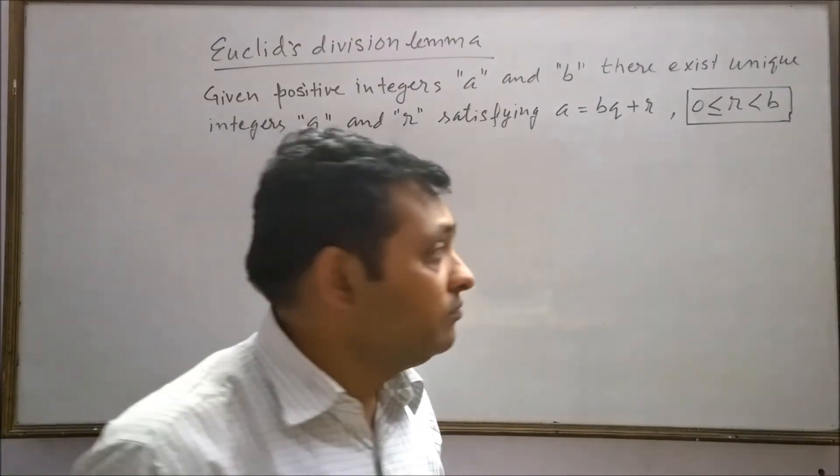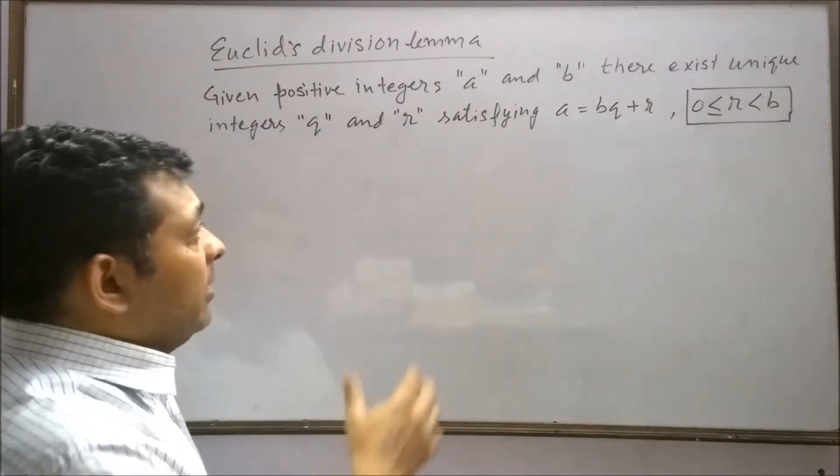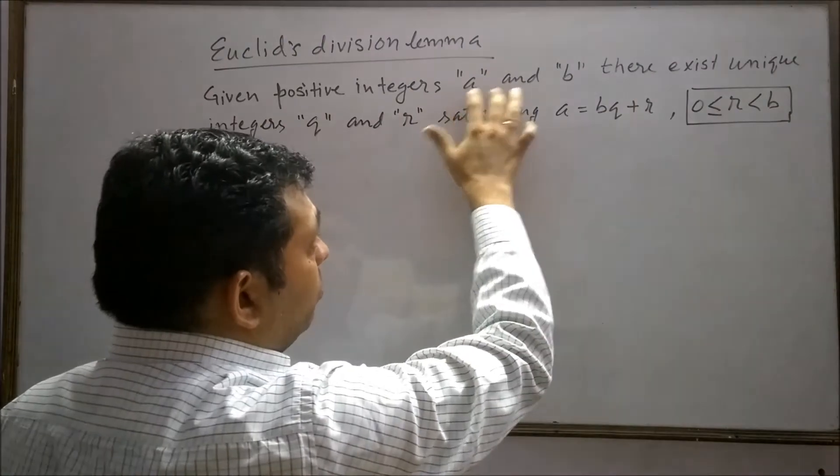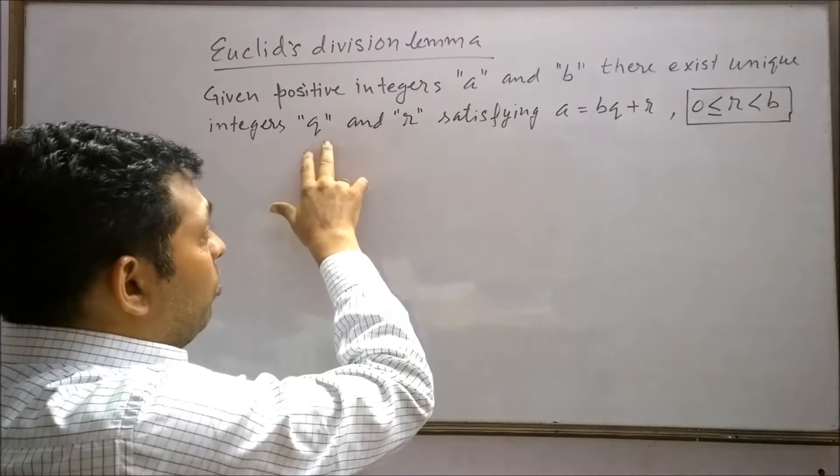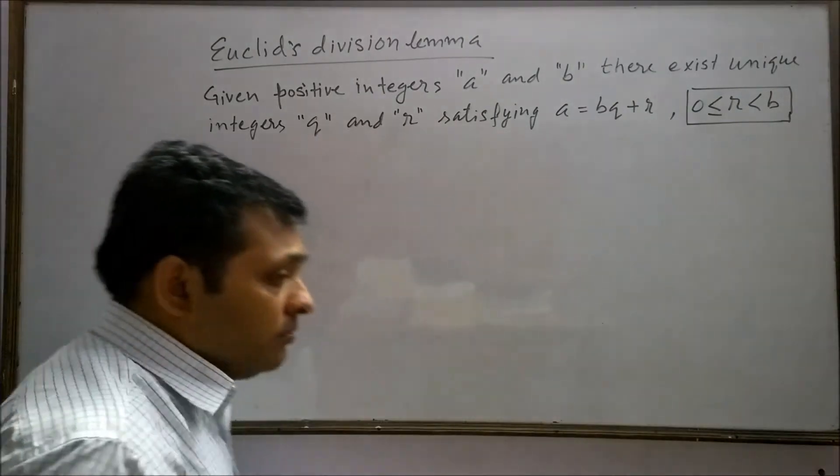What does it mean? This means that if we know that two positive integers a and b exist, then other integers q and r exist.